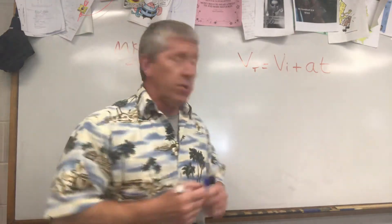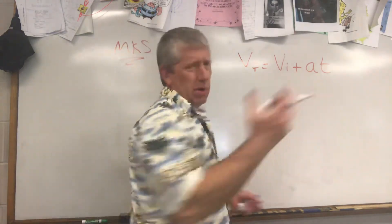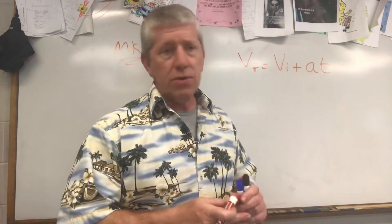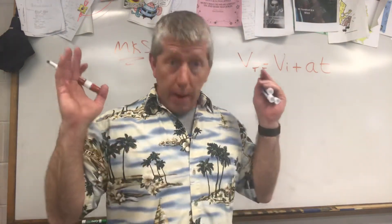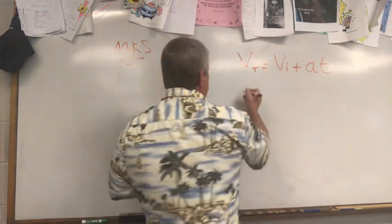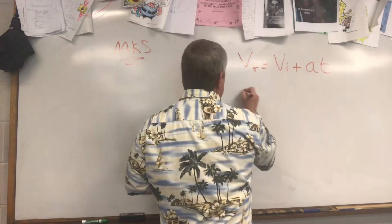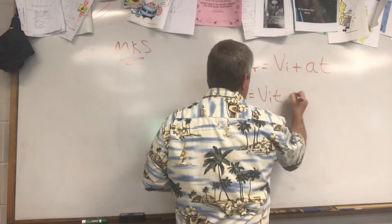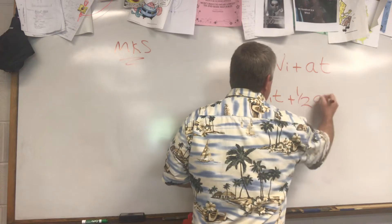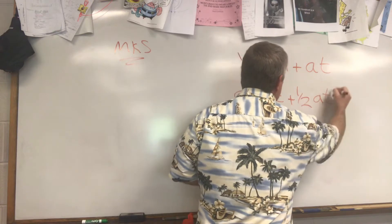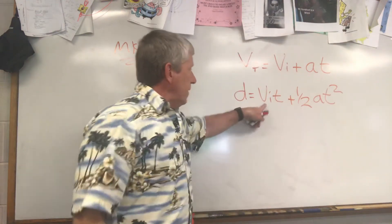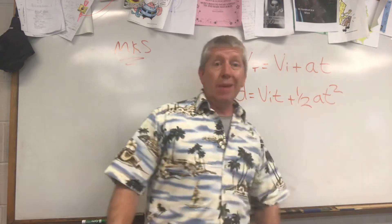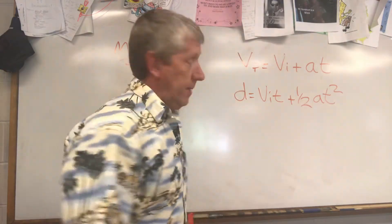There are two more Big Three equations with slightly more complex derivations — you don't need to know the derivations, just how to use the equations. The second one is set up for distance: d = Vi·t + ½·a·t². That's initial velocity times time, plus one-half acceleration times time squared.